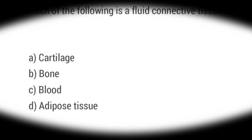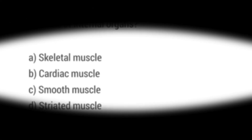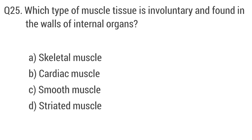Question 24: Which of the following is a fluid connective tissue? Options: A. Cartilage, B. Bone, C. Blood, D. Adipose tissue. The right answer is option C: blood. Question 25: Which type of muscle tissue is involuntary and found in the wall of internal organs? The right answer is option C: smooth muscles.